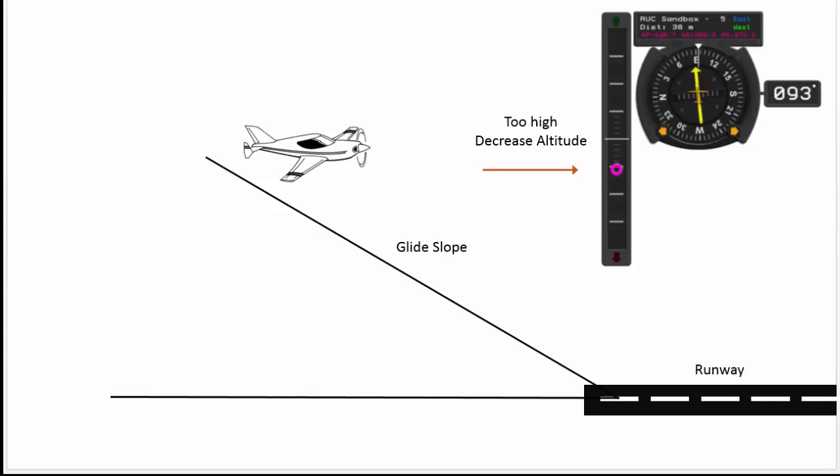So what you want to do is keep the glide slope indicator at the center or slightly below at all times.